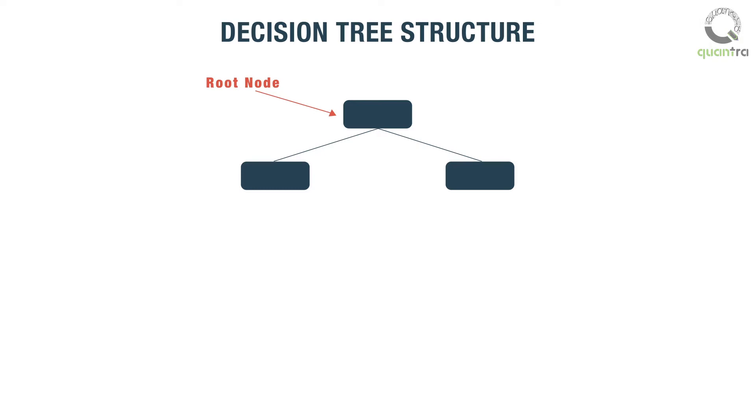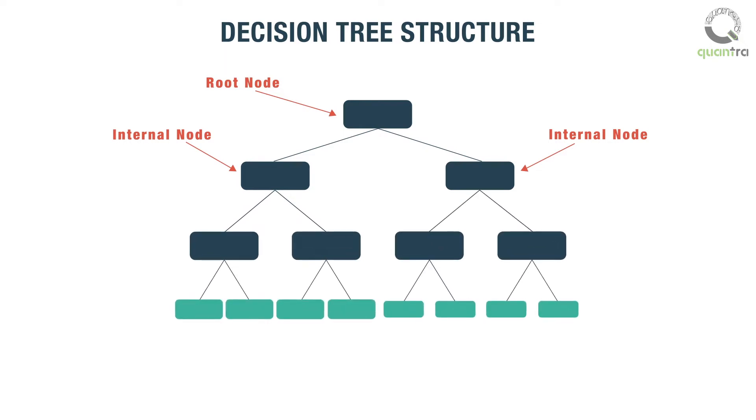A node with an outgoing pathway is called an internal node. Each internal node splits the predictor's space into two or more subspaces. The remaining nodes are called leaf nodes or decision nodes.